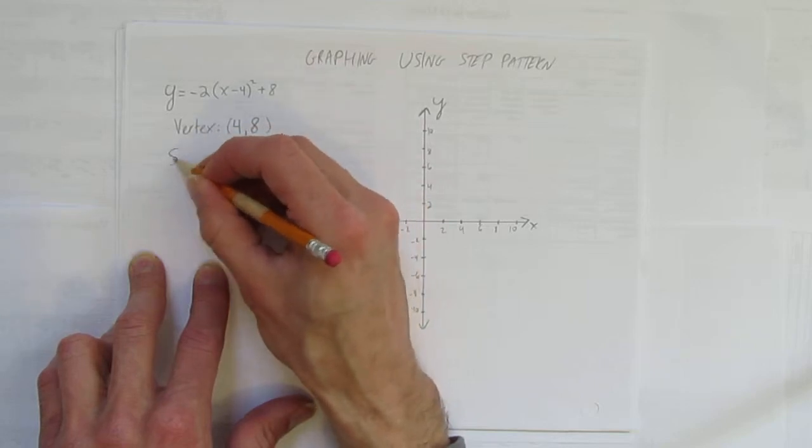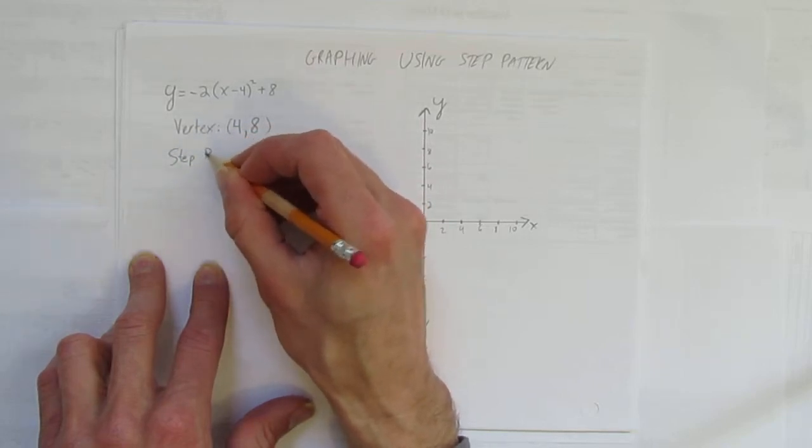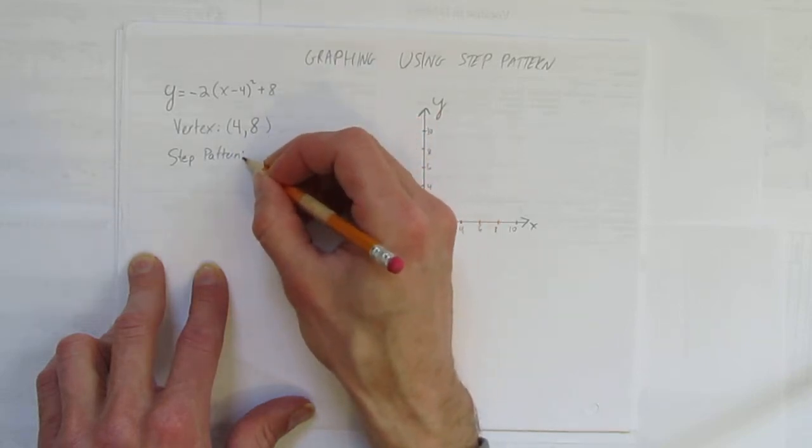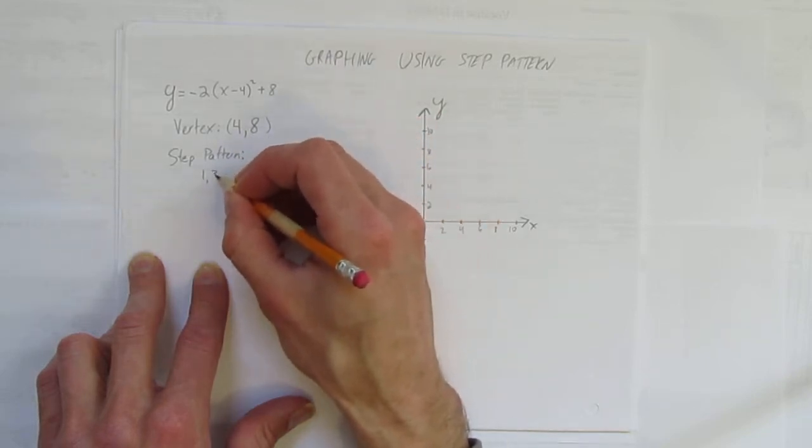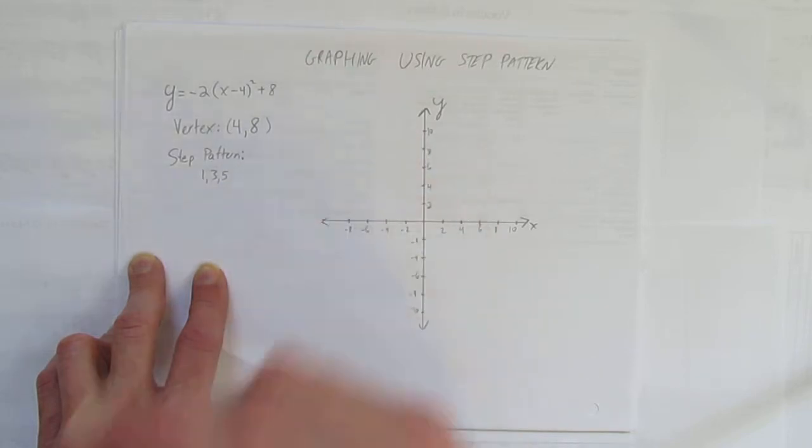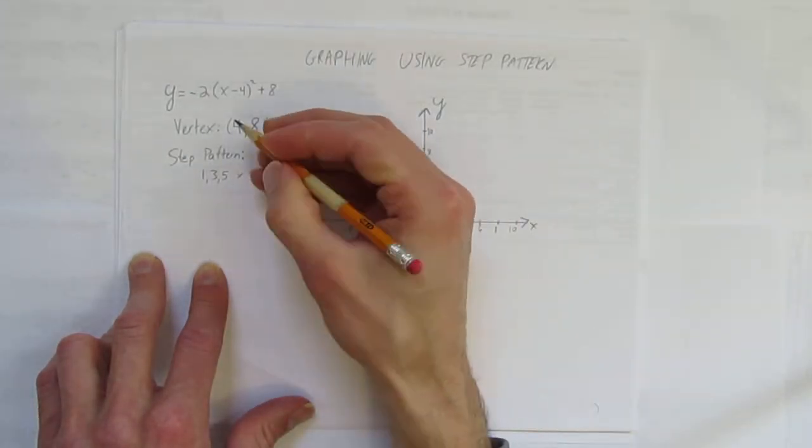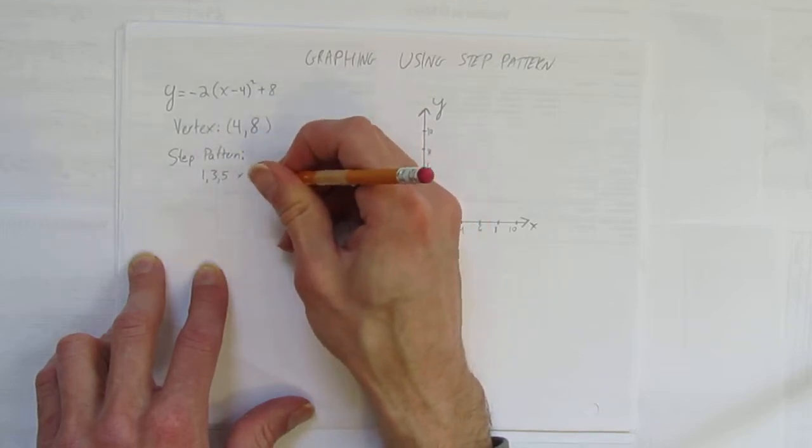Now we want to identify the step pattern. A lot of students just say the step pattern is a single number, but that's not true. You get the step pattern by taking 1 comma 3 comma 5, and you can keep going comma 7 comma 9, and multiplying it by whatever a is. In this case, a is negative 2.